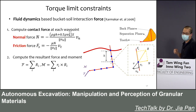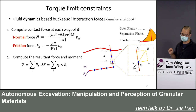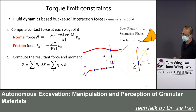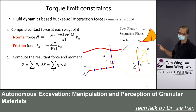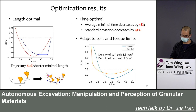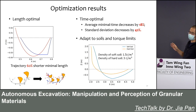For torque limit constraints, we approximately compute the normal and friction forces during excavation using a model related to fluid dynamics. Once we can do that, we can restrict the torque to always remain below some threshold. After combining everything together and solving the optimization, we get very good results.